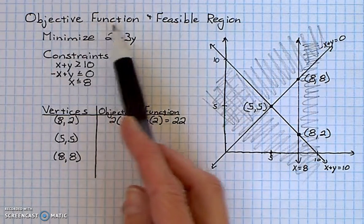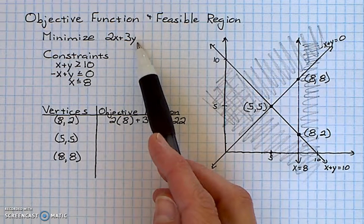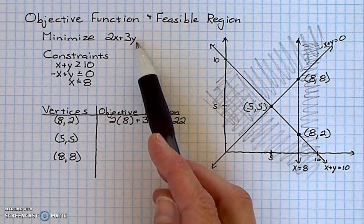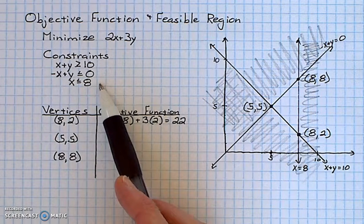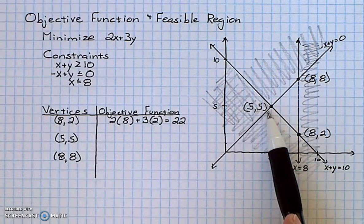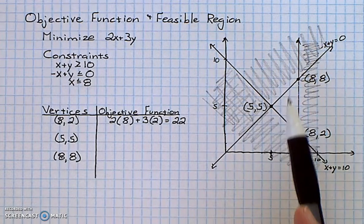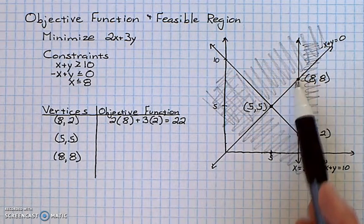Objective function and feasible region. If you're given a function to minimize or maximize and constraints, then you take your constraints, graph them, the white space is your feasible region, and then you find your vertices.